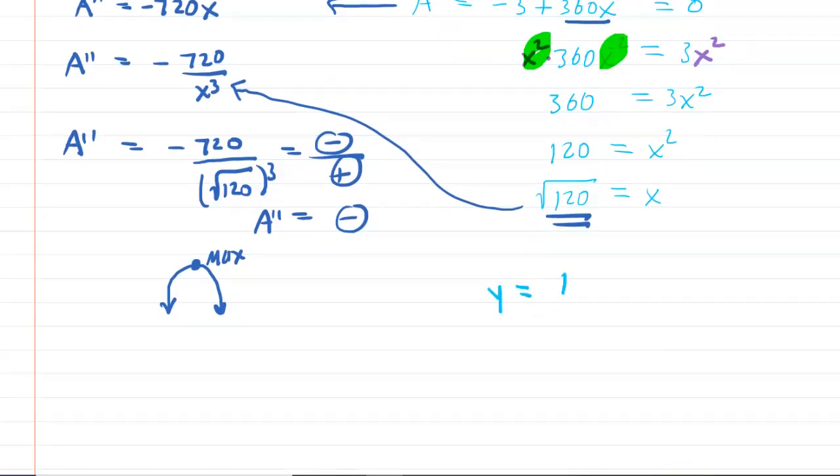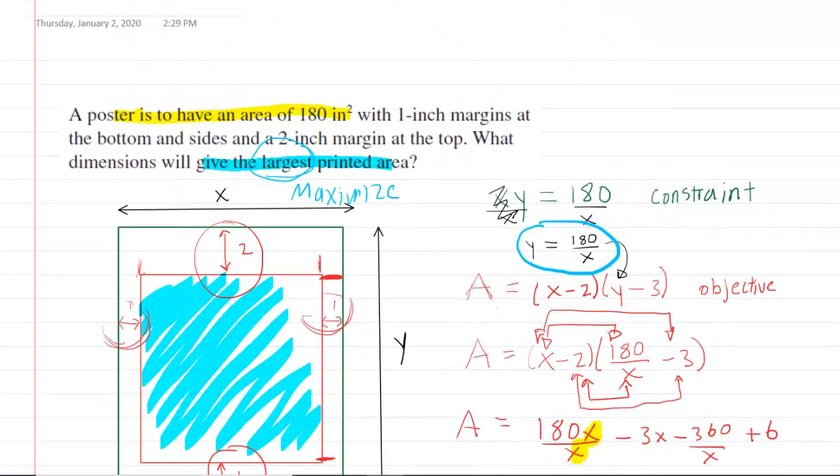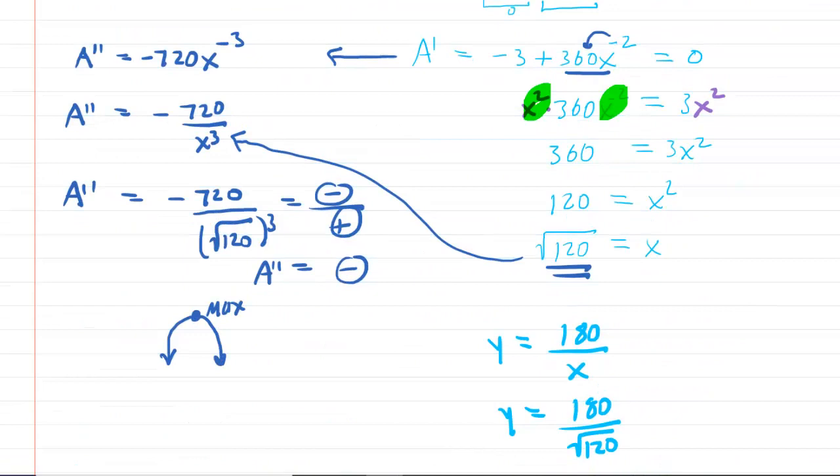But that's easy because the Y from this result earlier is 180 divided by X. So we just come down here and we say that Y is equal to 180 divided by our X value. Therefore the Y is 180 divided by the square root of 120. And these measurements were done in inches. So both the X value and the Y value, these will both be in the unit of inches.